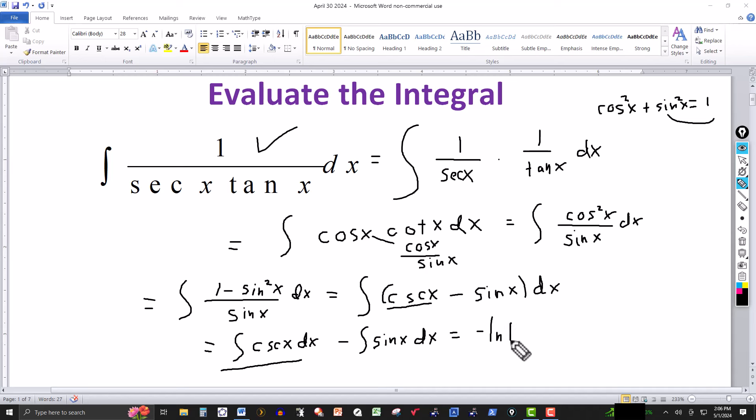So this would be minus the natural log of the absolute value... and it was cosecant of u. In this case we're dealing with x, plus cotangent of x.